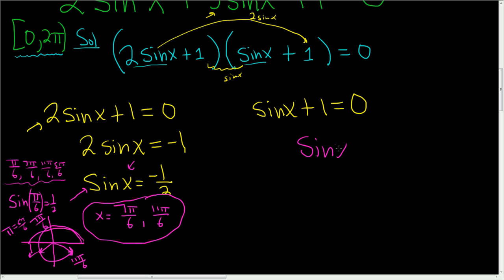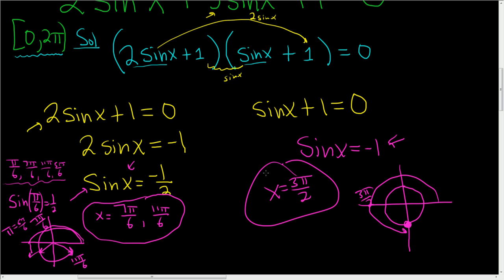And then here, you end up with sinx = -1. Again, think about the unit circle. This is the y-coordinate on the unit circle. When is the y-coordinate equal to -1? Well, right there. This angle here is simply 3π/2, so x = 3π/2. And that's it.